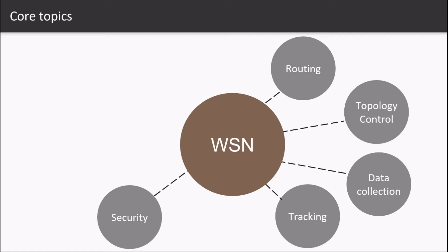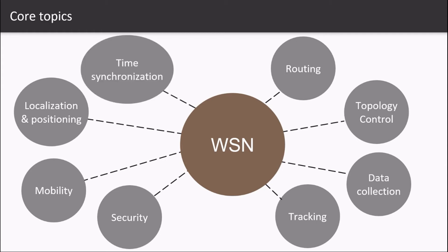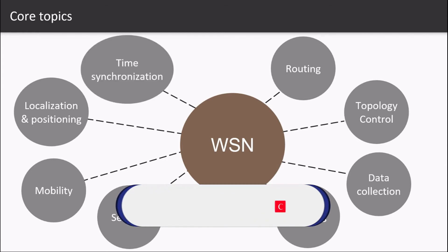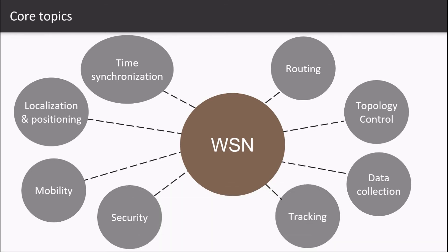Security is a major concern of almost every technology. Here, security is mostly related to identifying faulty nodes and Byzantine nodes in a network that may give false readings or data packets, either intentionally or unintentionally. Mobility, localization, and positioning is the basic requirement for tracking. Time synchronization: sometimes nodes are required to follow routine checks at specified times, which might need accuracy down to milliseconds and nanoseconds.